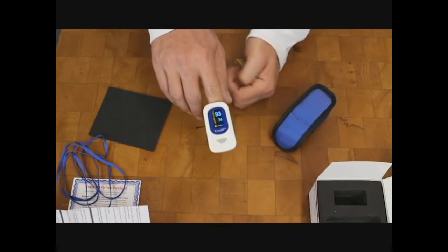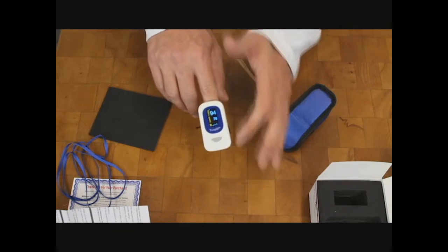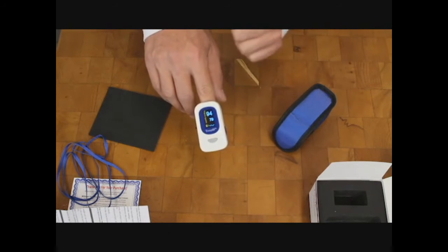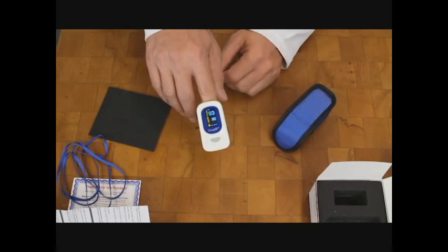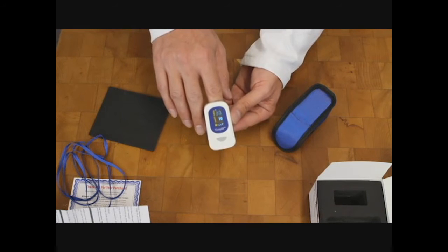Your top number is your oxygen saturation and your bottom one is the pulse. I went through the menu on the back side and turned off the beep because it will beep with the pulse, which is nice if you're monitoring somebody, but it was actually kind of loud for the video so I turned it off.